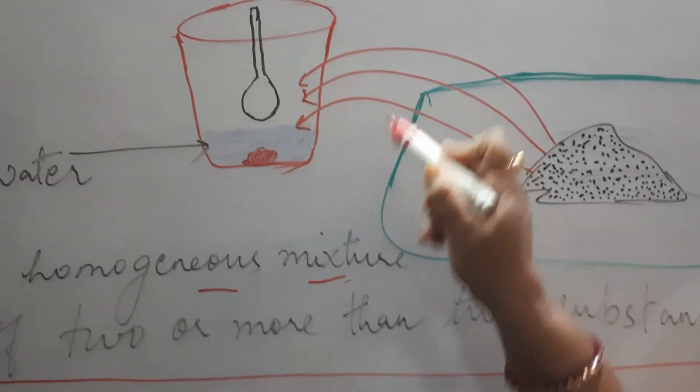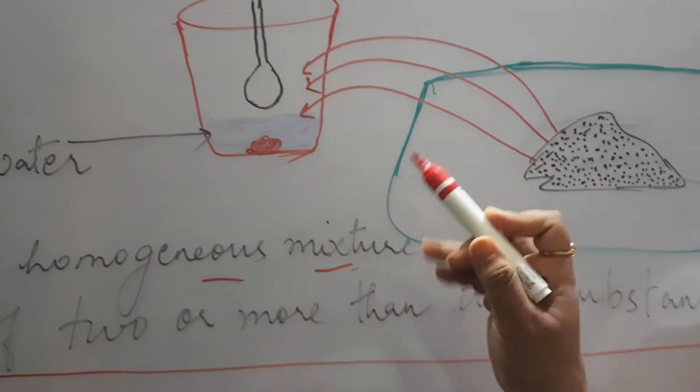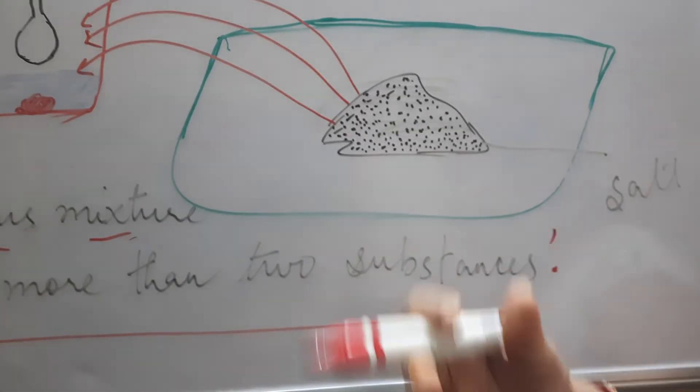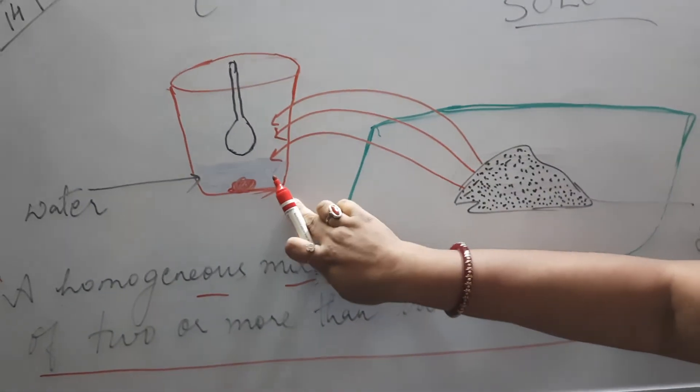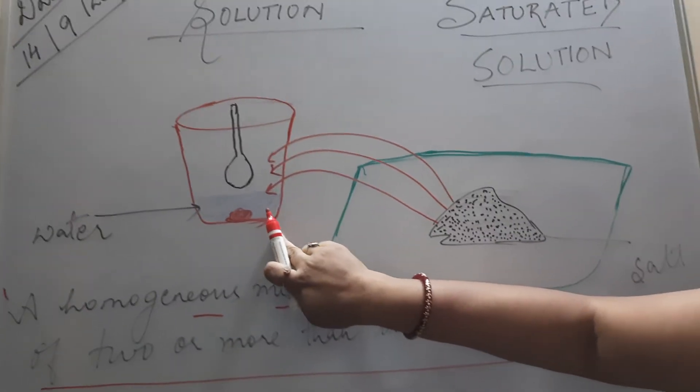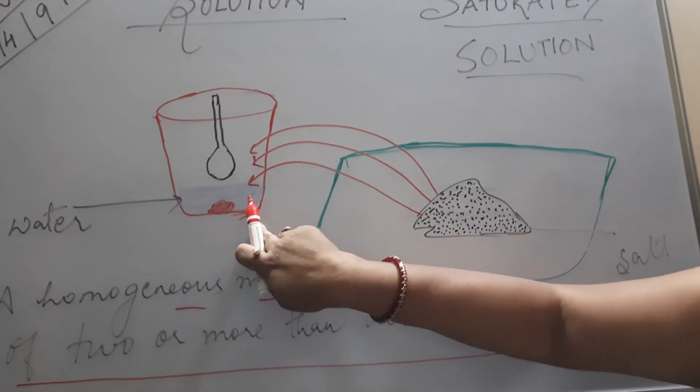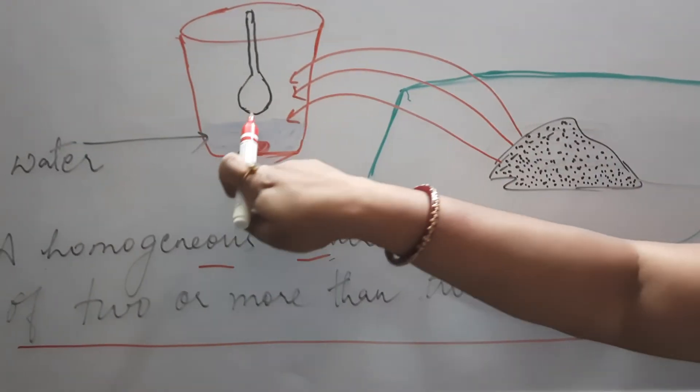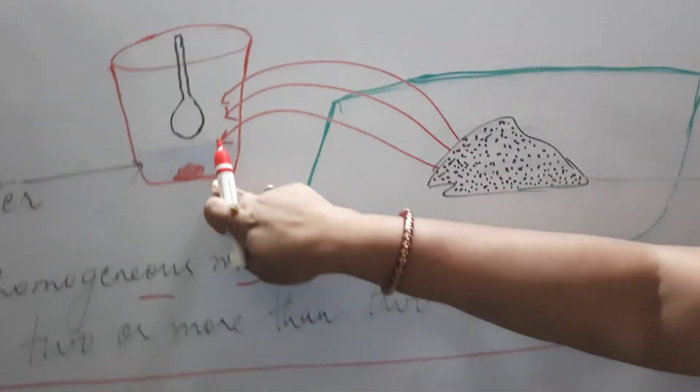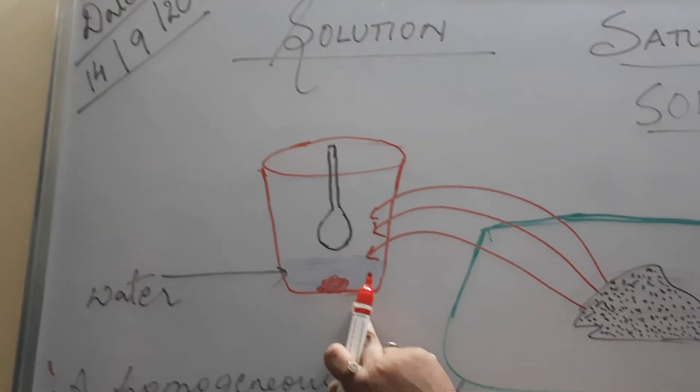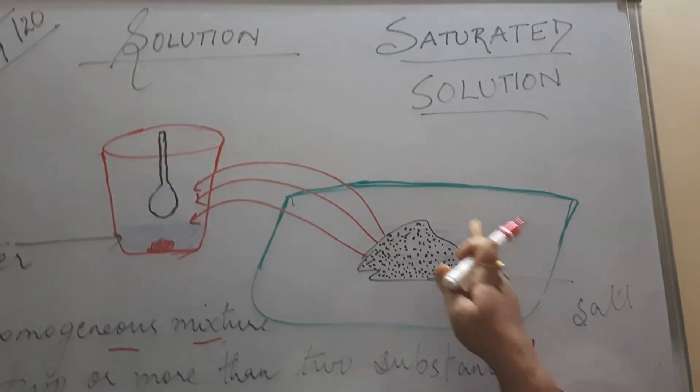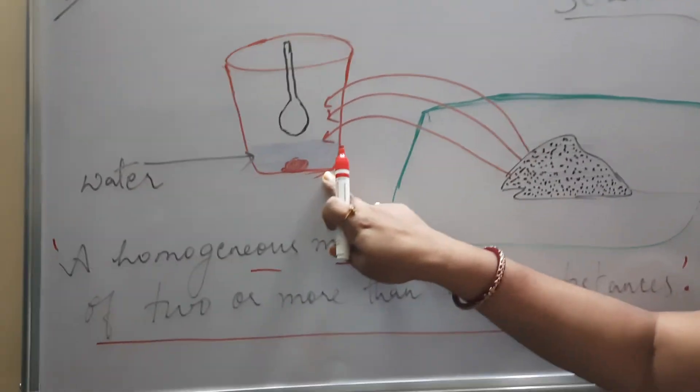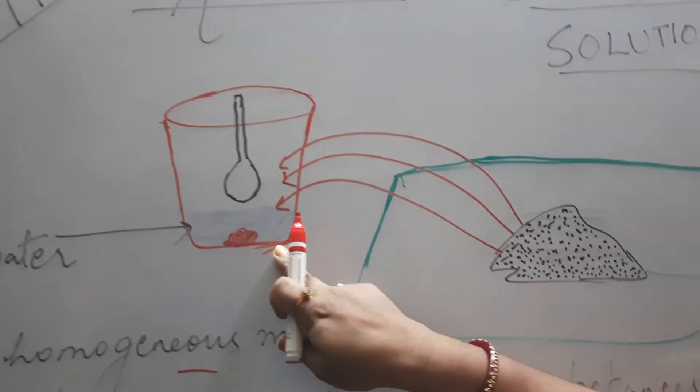This stage when no more salt can be added, because I am using the word salt as the substance over here. In chemistry term we use solute, meaning the substance which you are adding into the liquid. So that is known as solute. What is the solute you are using? That is salt. So a stage comes when no more solute can be added into the water. That liquid is also known in chemistry term as solvent.